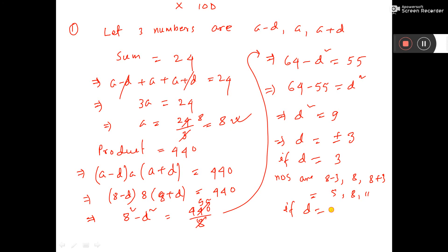If D equals minus 3, then the numbers are 8 plus 3, which is 11, then 8, then 8 minus 3, which is 5. So 11, 8, 5. These are the two answers. That's all.